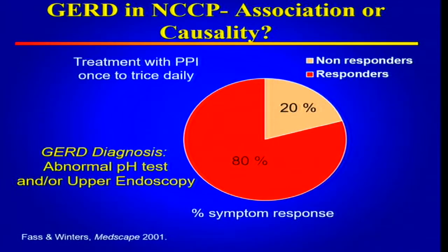The question everyone asks is: if you identify erosive esophagitis or abnormal esophageal acid exposure in patients with non-cardiac chest pain, is GERD truly the underlying cause of their chest pain? One study found that 80% of patients with an abnormal pH test and/or erosive esophagitis responded to anti-reflux treatment, suggesting that if either is abnormal there is a high likelihood that GERD is the underlying cause of the patient's NCCP.